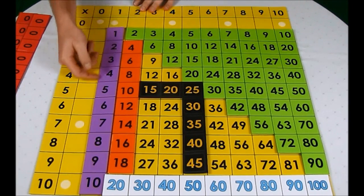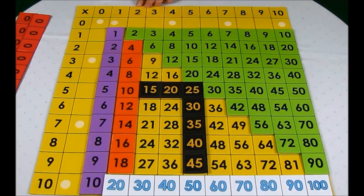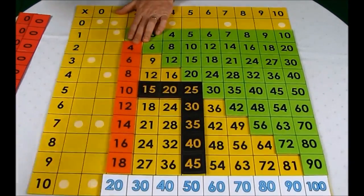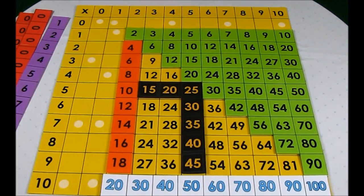A similar principle happens here in this little purple section. This is basically anything multiplied by one is itself. And if I understand that, then there's a bundle of more facts that I don't need to commit to memory. I just remember the principle that sits here.